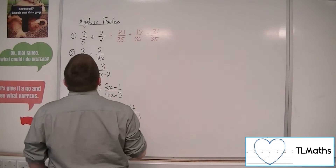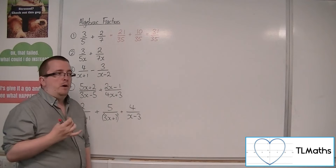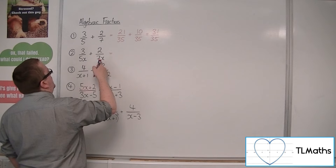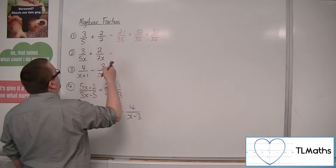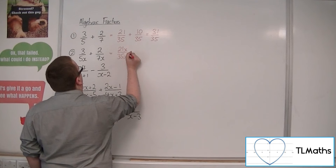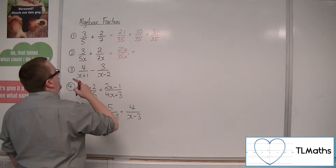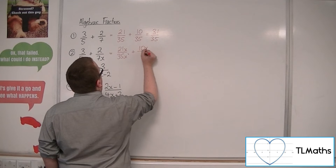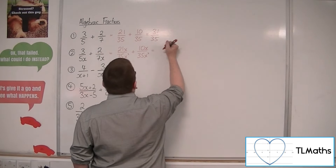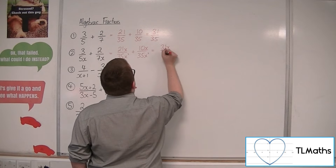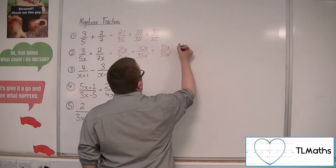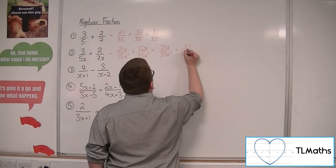When we get on to something like number 2, where I've put an x as a multiplier in the denominators, it's exactly the same idea. You can multiply the 3 by 7x and the 5x by 7x, giving 21x over 35x squared, plus 5x times 2, which is 10x over 35x squared. Now that you've got the same denominator, you can add the numerators to get 31x over 35x squared. Then you can cancel an x from numerator and denominator, giving 31 over 35x.